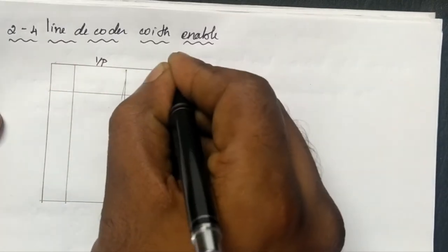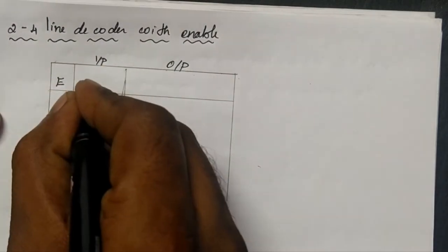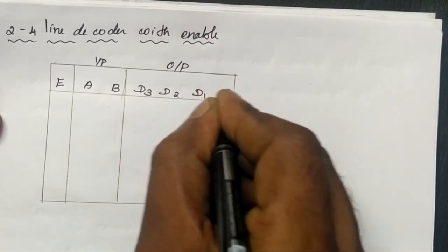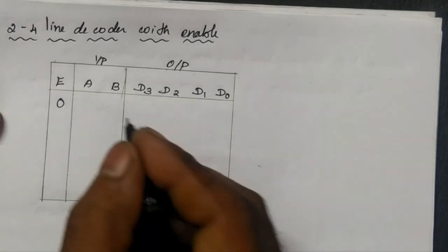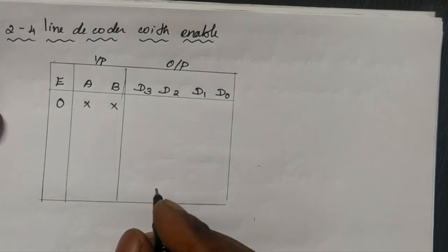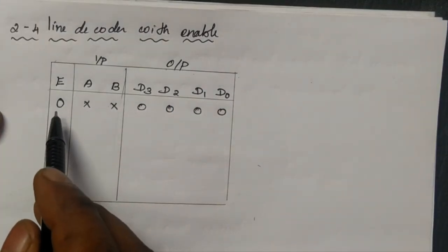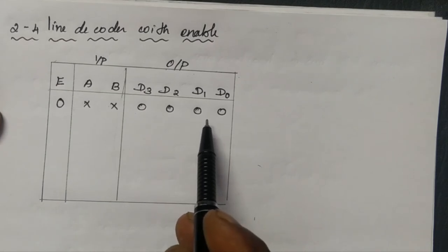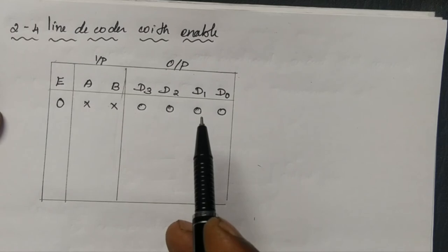So here we are considering the inputs A and B, outputs D3, D2, D1, and D0, along with an enable bit E. When the enable pin is 0, the input may be whatever — represented as don't care — and the output will always be equal to 0. This enable pin is used to overcome the drawback of the previous 2-to-4 line decoder.